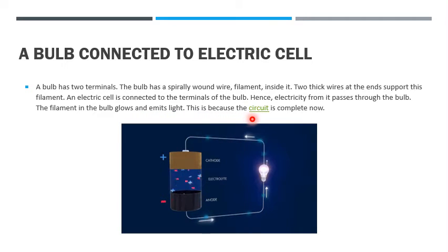This is because the circuit is complete. Now, as you are seeing in this picture, continuously the electricity is passing through the wire into the bulb and from the bulb to the cell.